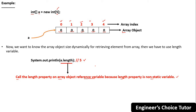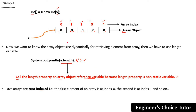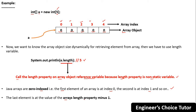Java arrays are zero-indexed, which means the index starts from zero. The first element of an array is at index zero, the second at index one, and so on. The important point here is that the last element is at the value of the array's length property minus one. For our array of size five, the last element is at index four — that is, five minus one equals four.